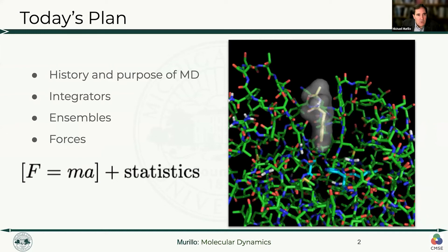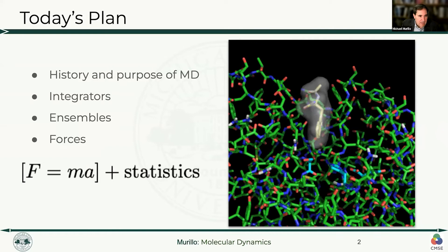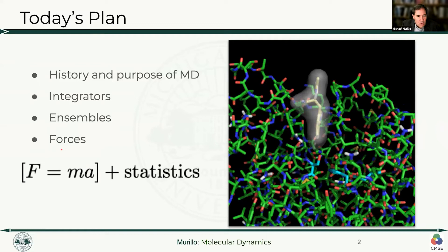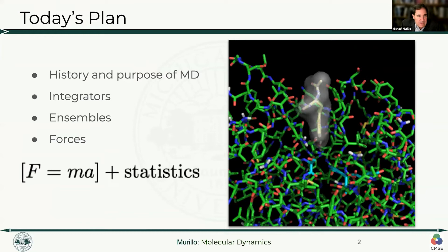Looking at Newton's second law, we see F = ma, where a is the second derivative of position — x double-dot. To solve this equation we need to study integrators. We need to include statistical mechanics, which is why we think about ensembles. And on the left-hand side are the forces — if we don't know our forces, we can't start. We don't know what material we have or what we're simulating. These are the three top topics to start with for molecular dynamics.